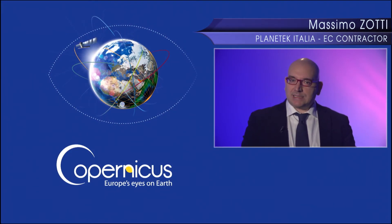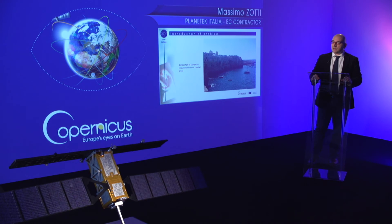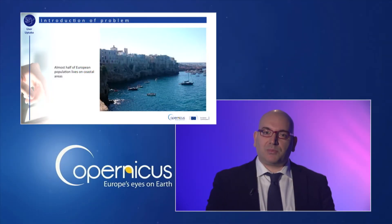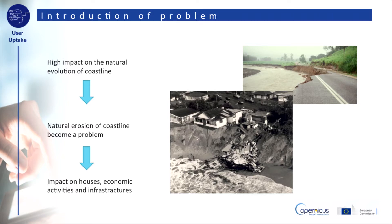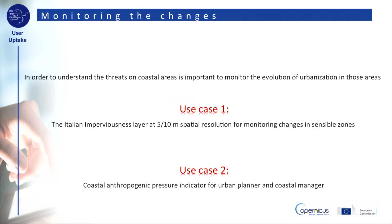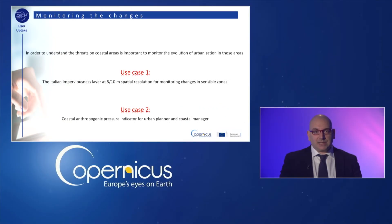Hi. The aim of this sub-module is to show how it is possible to use the Copernicus data in order to analyze the anthropogenic pressure on coastal areas for management purposes. Half of the European population lives in coastal regions. The potential for economic opportunities in coastal cities often attracts people from economically depressed rural areas. As a result, the growing coastal population has a considerable impact on the natural evolution of the coastline. It alters important natural ecosystems, which also has repercussions for the economic activities and infrastructures. Therefore, it is important to monitor the urban settlements in those areas in order to adequately plan their evolution.